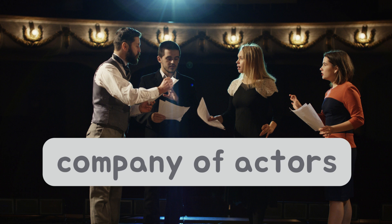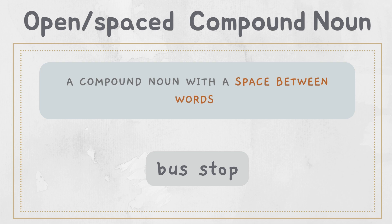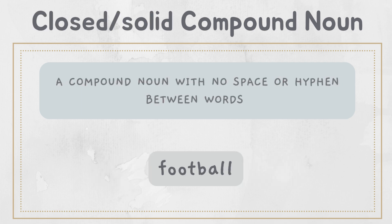Now let us see what compound nouns are. A compound noun is a noun made up of two or more existing words combined into one, like smartphone, football, lunchtime, etc. Compound nouns have three different forms: open or spaced compound nouns in which there is a space between words, for example 'bus stop'; hyphenated compound nouns in which there is a hyphen between words, for example 'mother-in-law'; and closed or solid compound nouns in which there is no space or hyphen, for example 'football.'